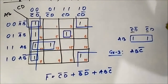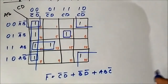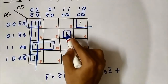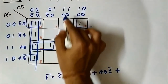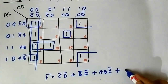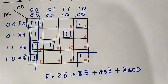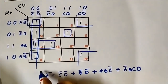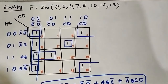For the single-cell group (cell 7), it is very simple — there is only one cell involved, so the entire cell's Boolean term will appear in the simplified expression. That is a bar, b, c, d. So the final simplified Boolean expression is: c bar d bar + b bar d bar + a b c bar + a bar b c d.